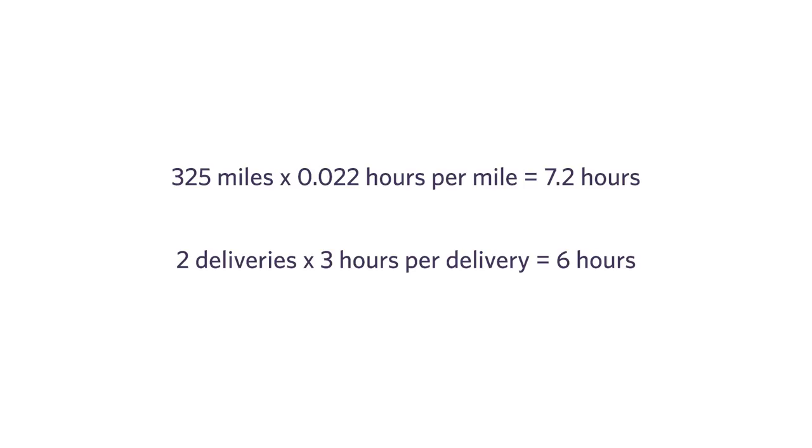Similarly, 0.92 is the effect of an additional delivery on hours after filtering out the effect of miles on hours. If you start to think about it like this, you'll notice where we would have gone wrong by taking our simple averages. When we looked at miles separately, we had an estimate of 7.2 hours to go 325 miles. And with deliveries separately, we had an estimate of 6 hours to make two deliveries.